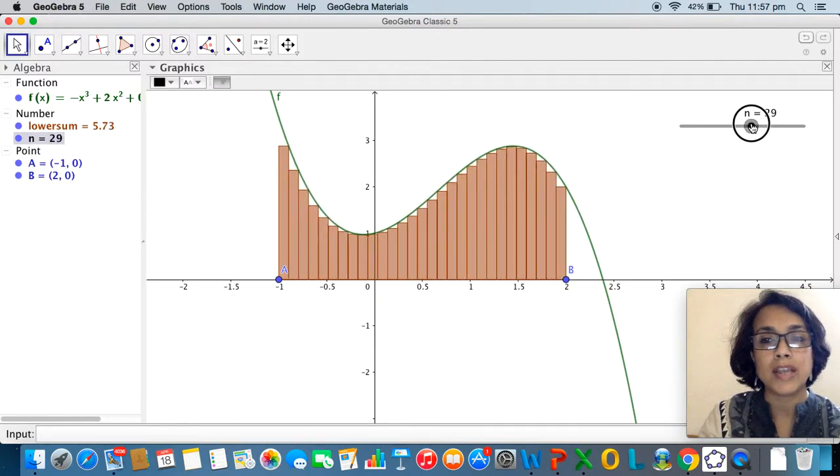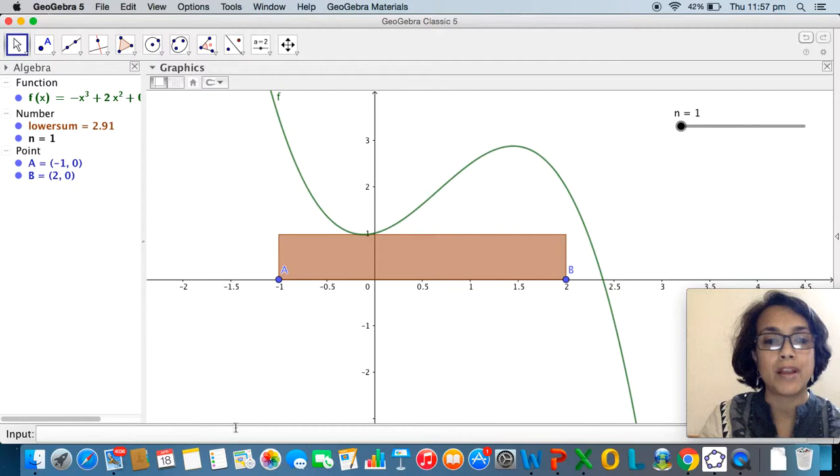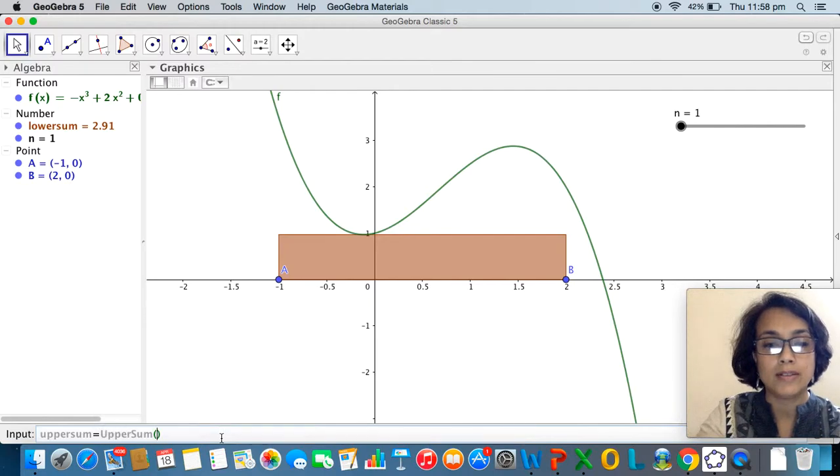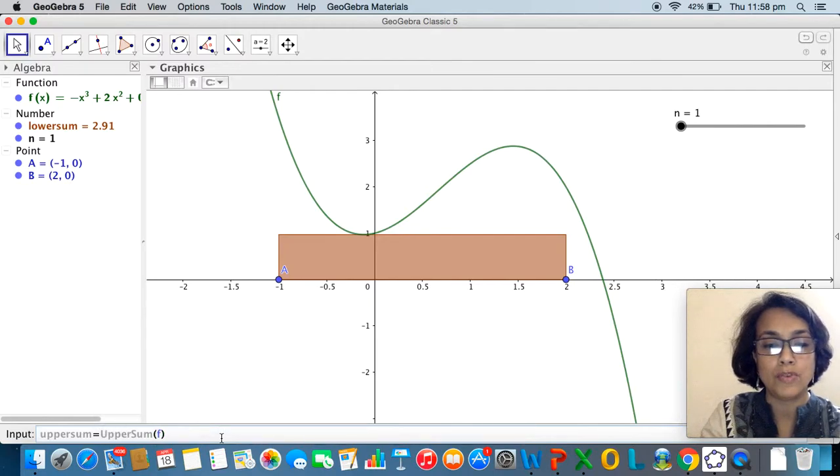Right now I bring this n back to position 1 and now I'm going to define the upper sum just the way I defined the lower sum. So I'll say upper sum is equal to, use the upper sum command, and in the same way I'm going to look at the upper sum of f as x ranges from a to b comma n.